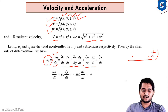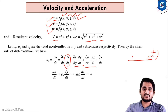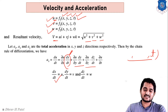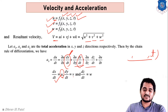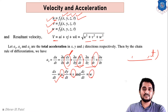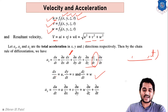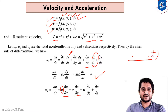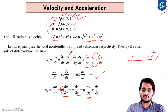Now we substitute: dx/dt is velocity in the x-direction, u; dy/dt is velocity in the y-direction, v; and dz/dt is velocity in the z-direction, w. So acceleration in the x-direction becomes: ax = u(∂u/∂x) + v(∂u/∂y) + w(∂u/∂z) + ∂u/∂t. For the x-direction acceleration, we differentiate u with respect to x, y, z and time.